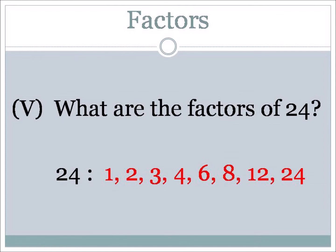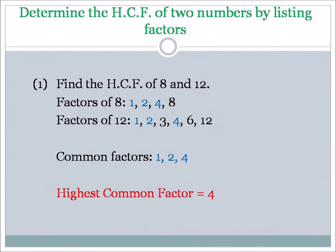Now let's determine the HCF of two numbers by listing factors. Find the HCF of 8 and 12. Factors of 8: 1, 2, 4, and 8. Factors of 12: 1, 2, 3, 4, 6, and 12. The numbers in blue — 1, 2, and 4 — are the common factors of 8 and 12. The highest common factor, or greatest common factor, is 4.